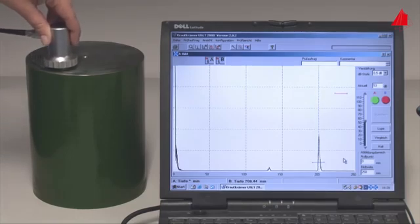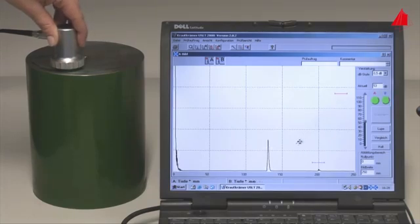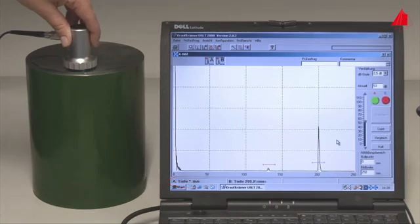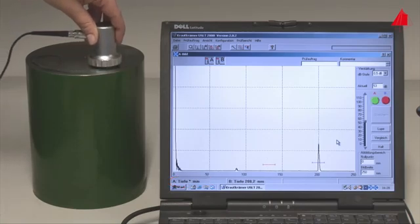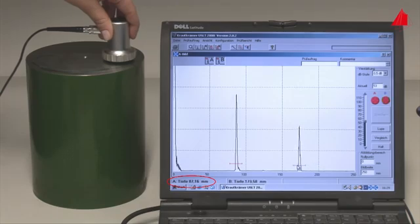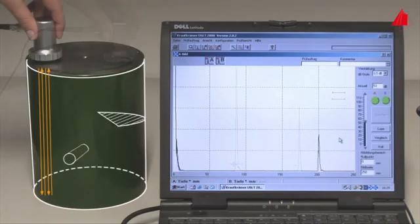A defect echo appears on the monitor. This defect is located in a depth of 130 millimeters below the surface. Another echo indicates a defect in a depth of 87 millimeters. The second smaller echo at 174 millimeters is caused by double reflection on the same imperfection.